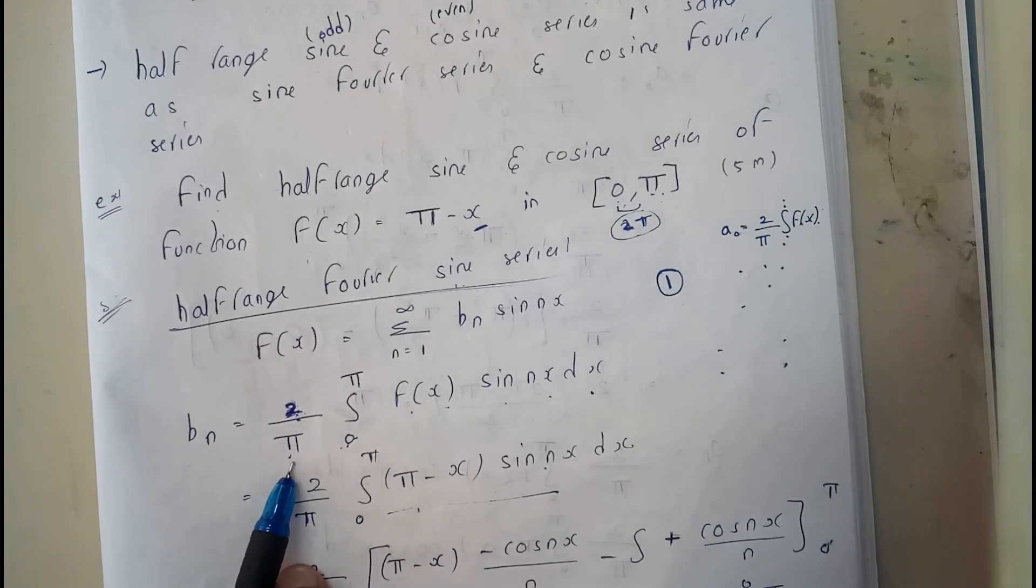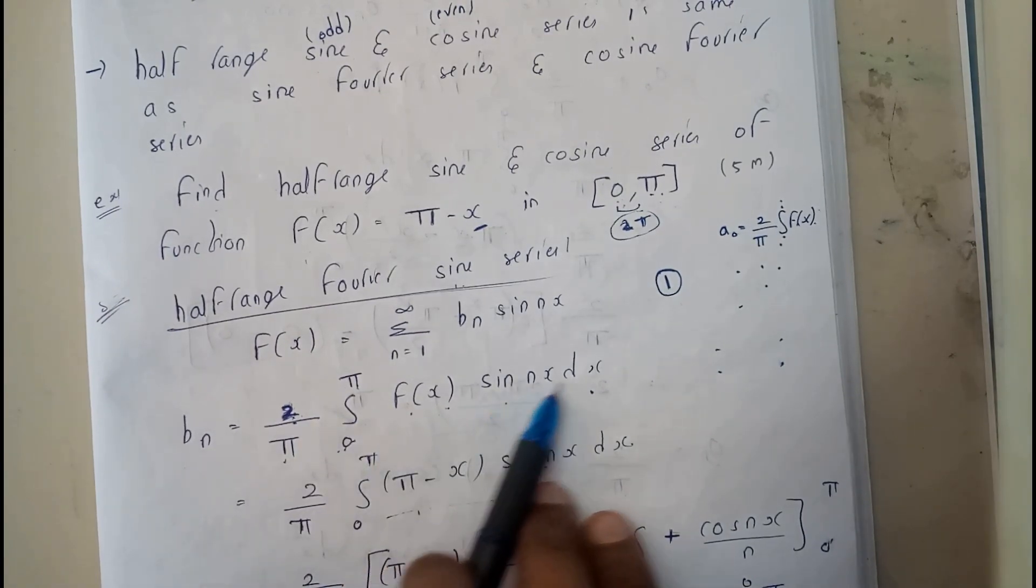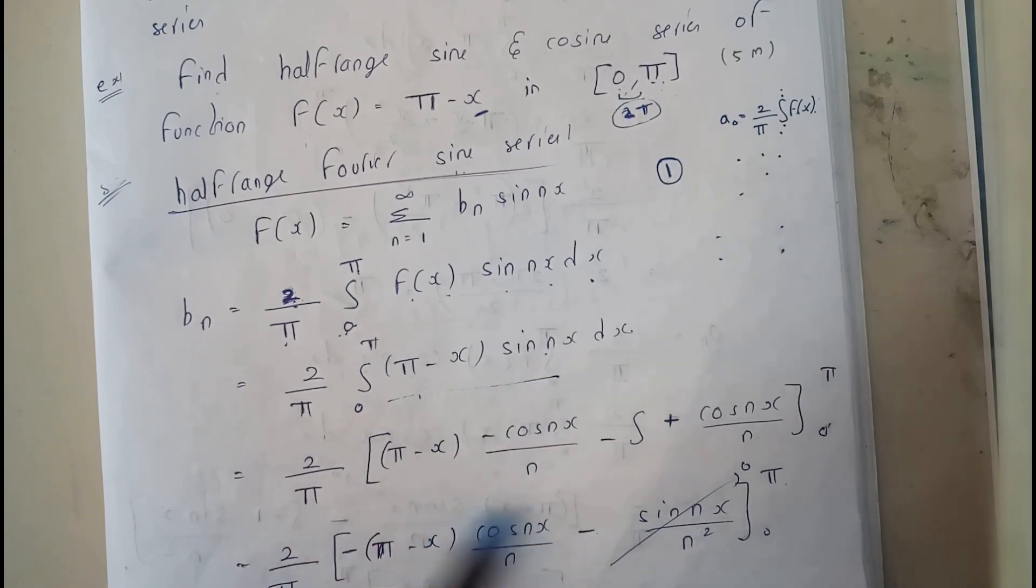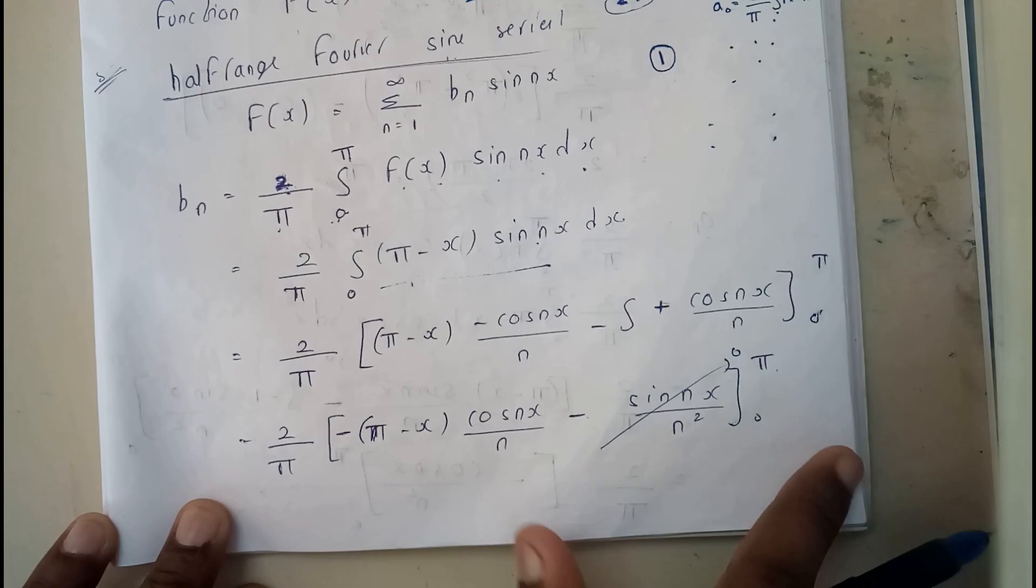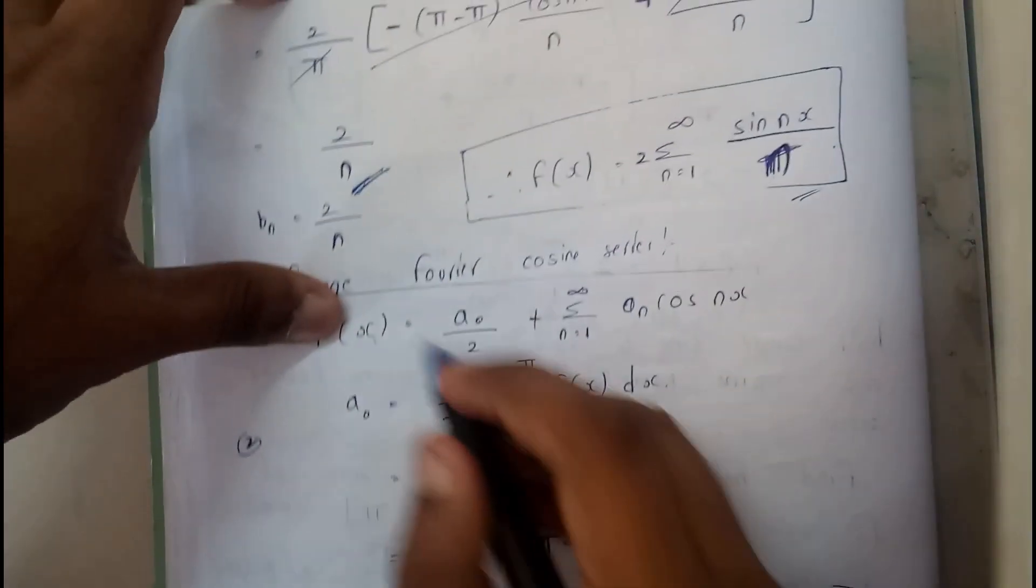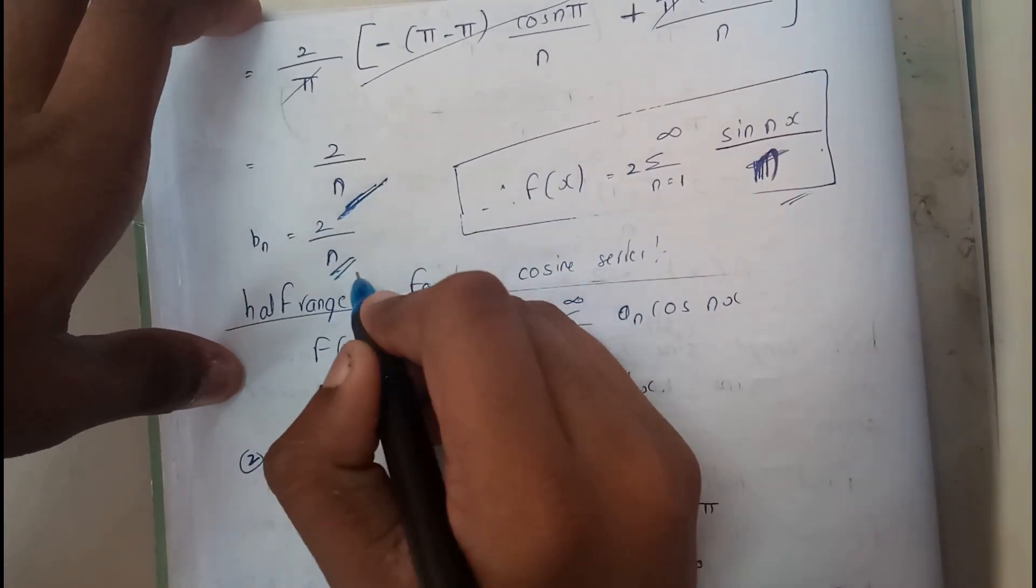So bₙ = (2/π) ∫₀^π f(x) sin(nx) dx. We substituted π - x, so we did UV integration. Here we got sine, so we will be neglecting that to 0 and we have substituted the limits, so that we got 2/n at the end. So that is our bₙ.